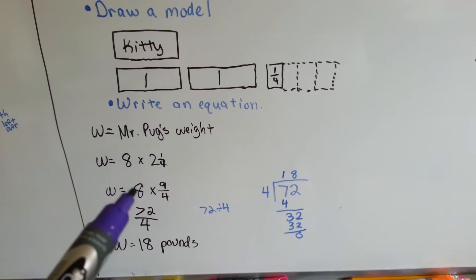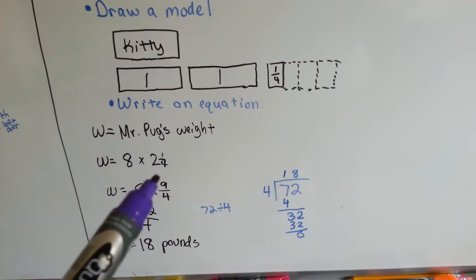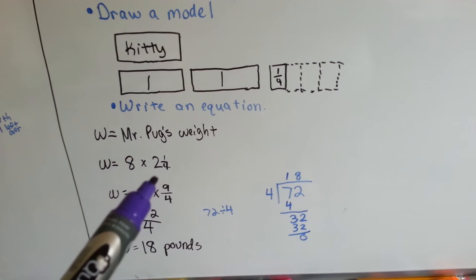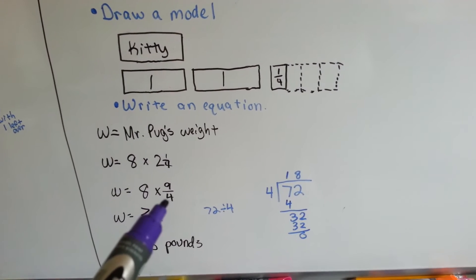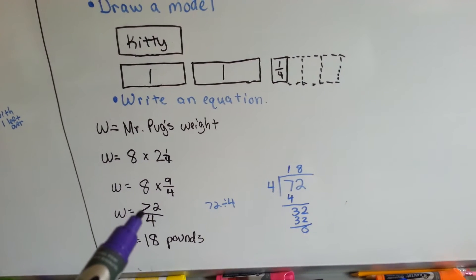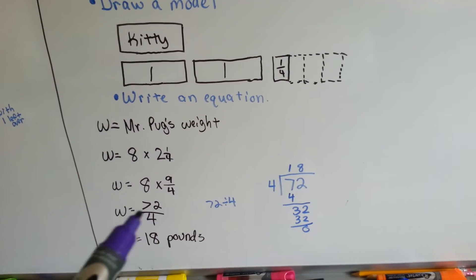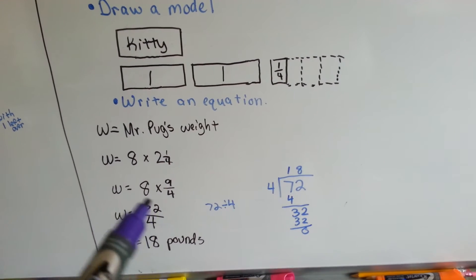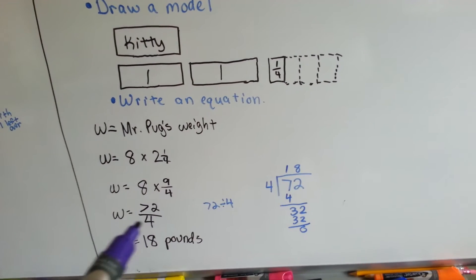We multiply the whole number times the numerator. Eight times nine is seventy-two, and we put it over the denominator four. We have seventy-two-fourths. Knowing that the fraction line is like a division sign, and we can't leave this as an improper fraction, we do seventy-two divided by four.